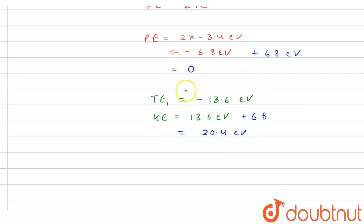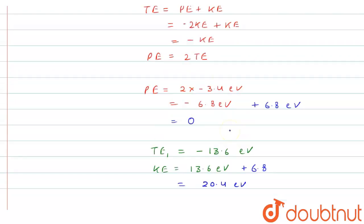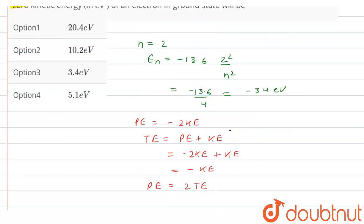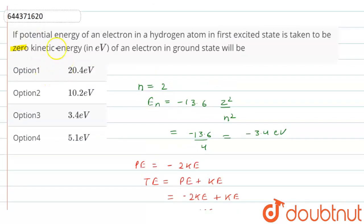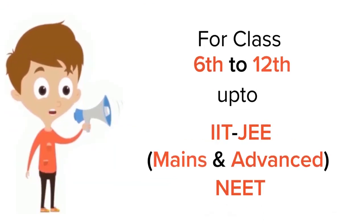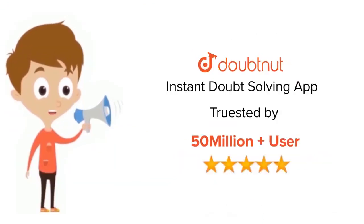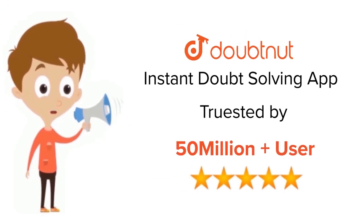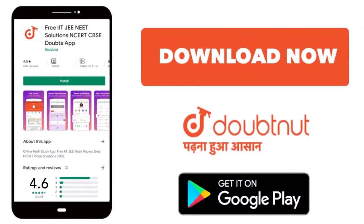With this reference, the kinetic energy in the n = 1 state is 20.4 electron volts. Therefore option one is the correct answer. Thank you for watching. For class 6 to 12, IIT JEE and NEET level, trusted by more than 5 crore students — download the DoubtNet app today.